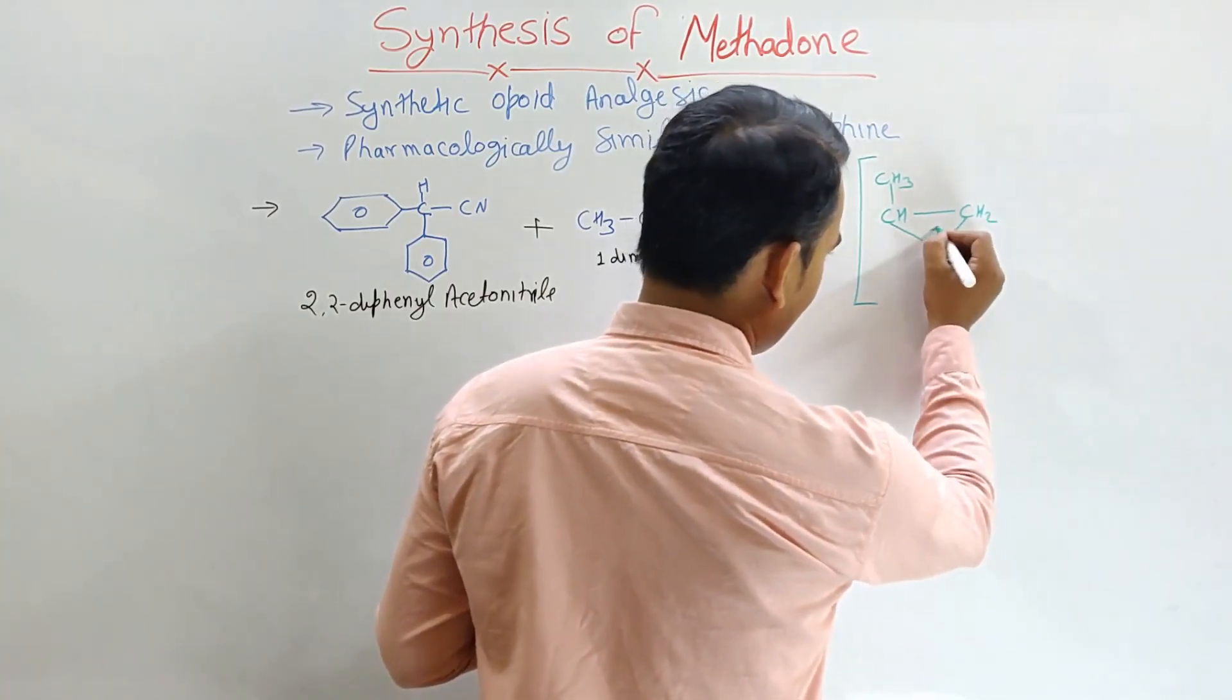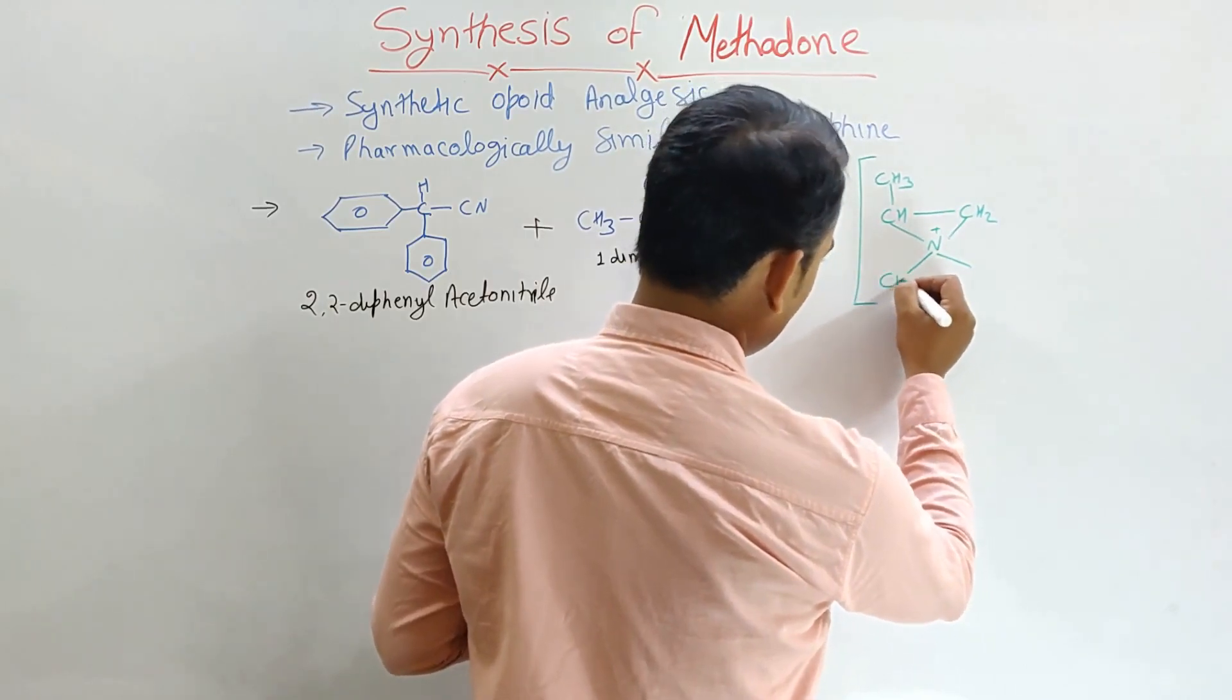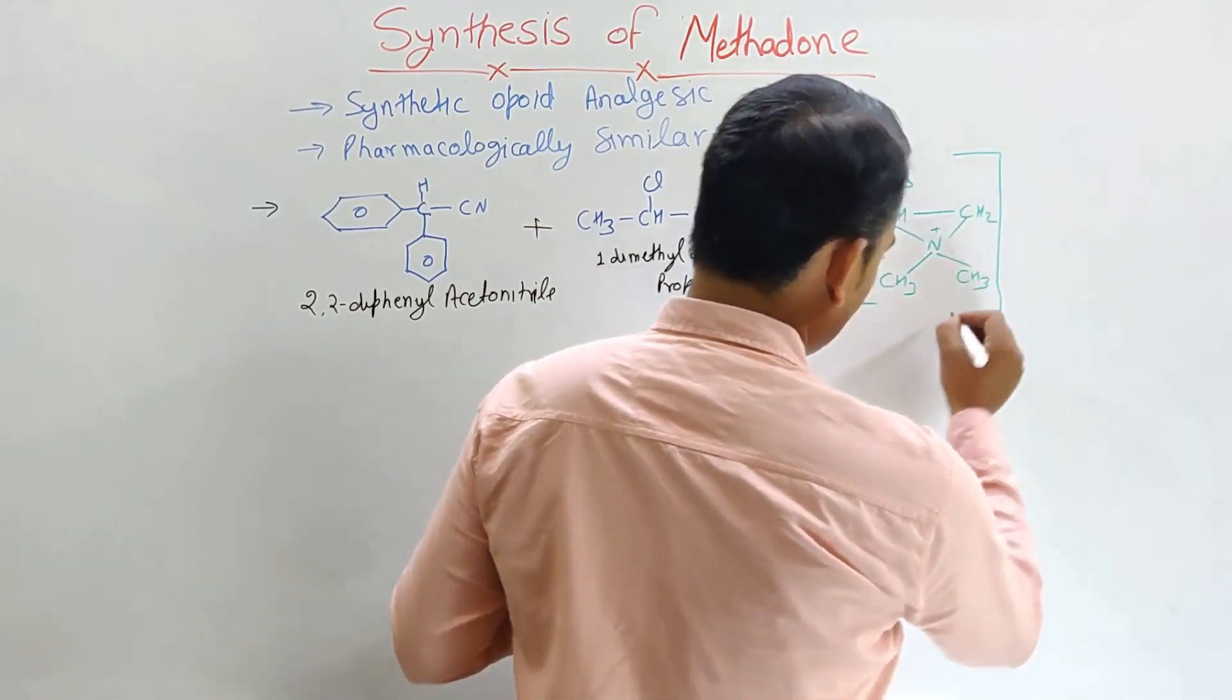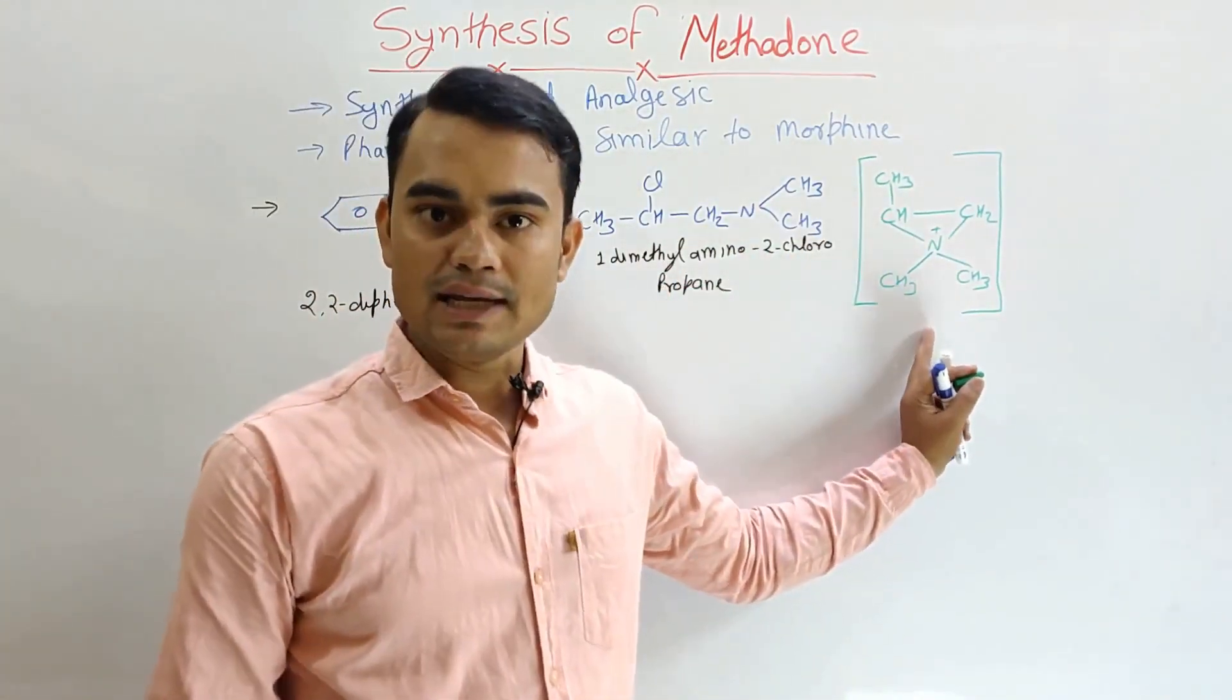With this, here it becomes positive charge because here the valency will become the fourth. Here CH3 and this is also CH3. So 1-dimethylamino-2-chloropropane exists in the cyclic form.